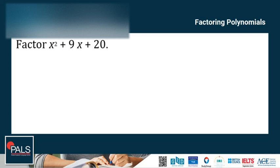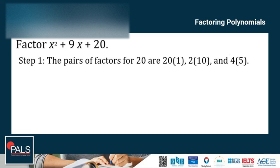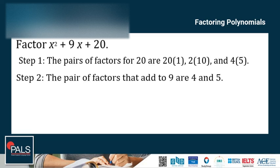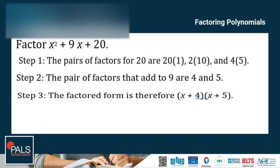Another example: factor x squared plus 9x plus 20. Step 1: the pairs of factors for 20 are 20 times 1, 2 times 10, and 4 times 5. Step 2: the pair of factors that add up to 9 is 4 and 5, because 4 plus 5 equals 9. Step 3: the factored form is (x plus 4)(x plus 5).